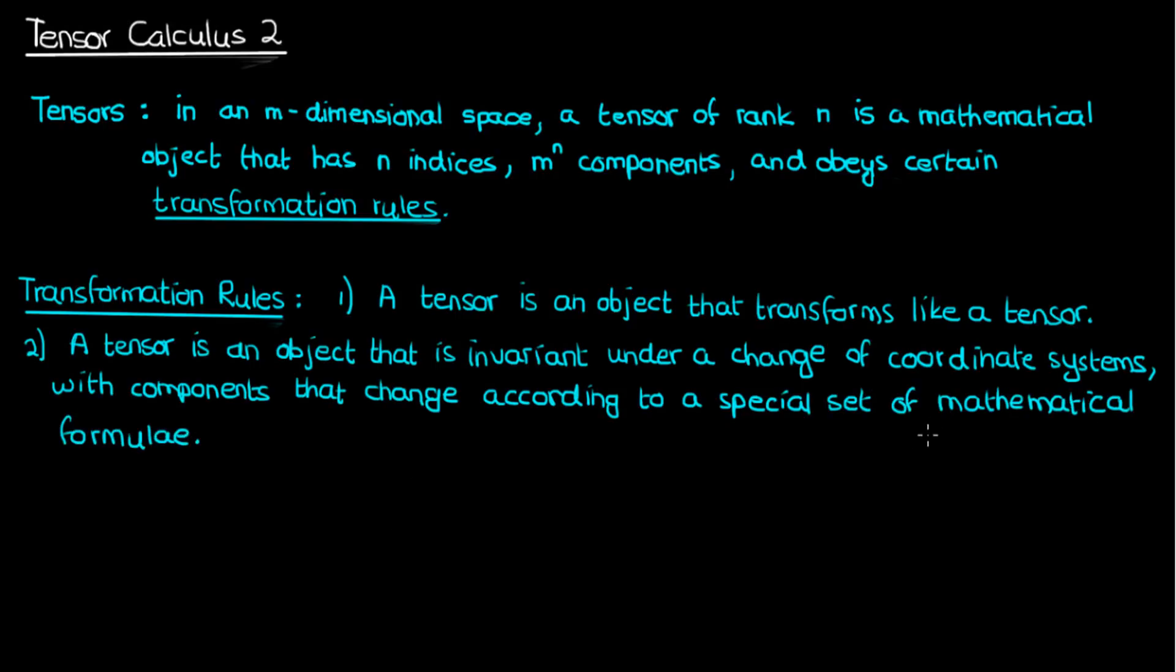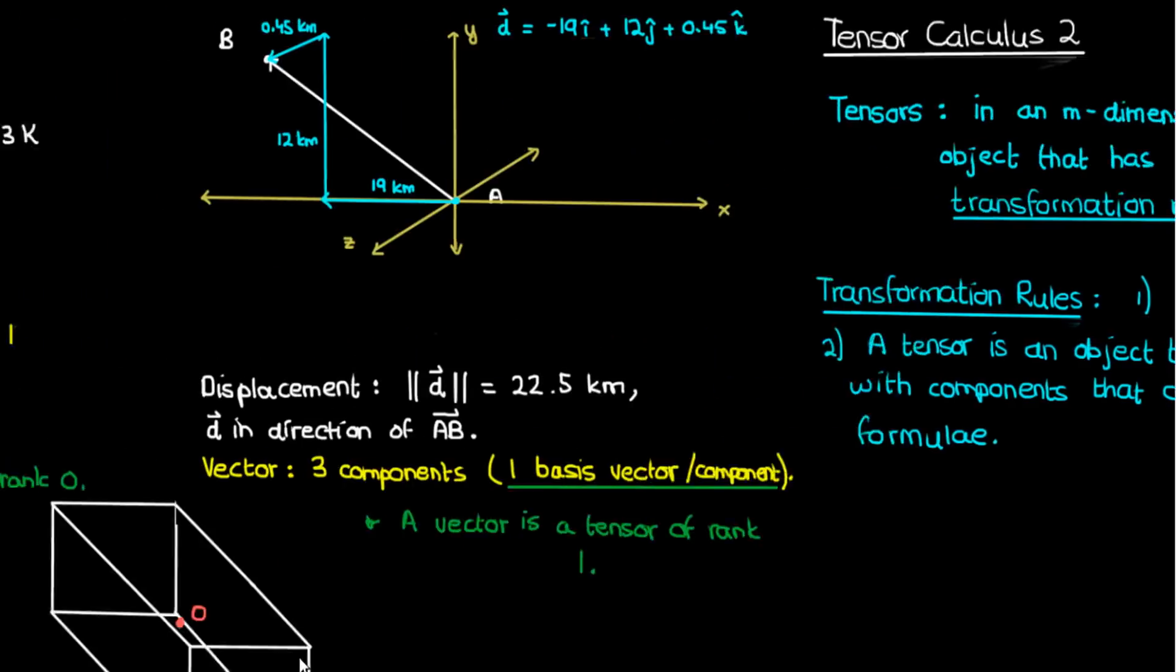Now the first way to describe transformation rules is pretty bad. It's ridiculously vague and terrible for beginners. That's why we're going to use the second way to describe transformation rules for tensors, that tensors are invariant under a change of coordinate systems. And in order to do that let's go back to the tensors that we discussed in the previous video.